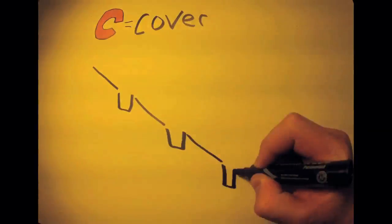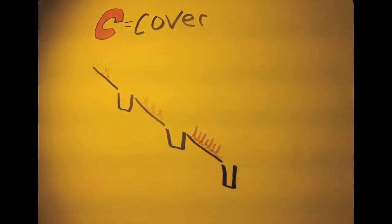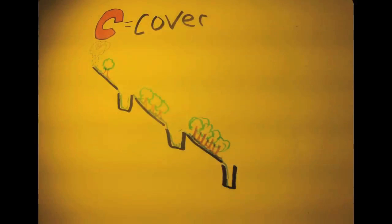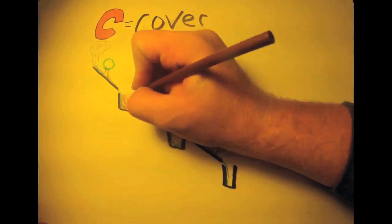C is the cover factor from plants and crops, which reduce soil loss. Poor ground cover, land with less plants, can have higher rates of soil loss. While good ground cover, land with more plants, can reduce soil loss significantly.